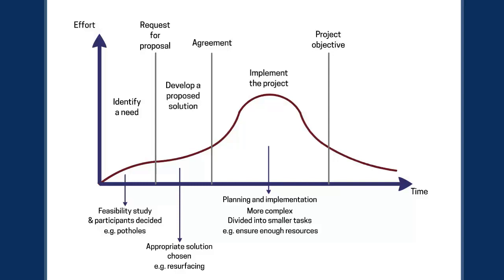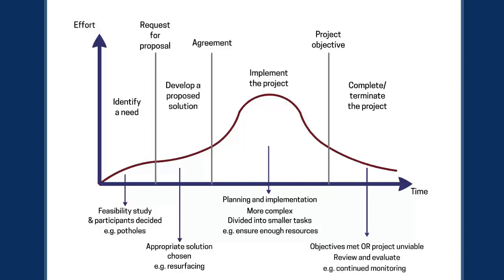Before we get to the fourth stage, we have to make sure the project objective is complete. The project can either be complete or it may no longer be viable and has to be terminated. In this final fourth stage, we review and evaluate how well the project has done and identify any lessons to be learned. For our roadworks example, we'd look at the resurfacing and ask whether it did the job. To judge that effectively, the roads have to continue to be monitored — does the resurfacing hold up, or do the old potholes come back? Only by doing this can lessons be truly learned and taken forward.